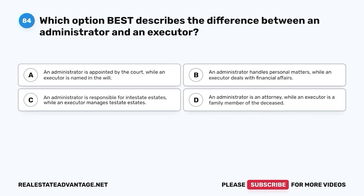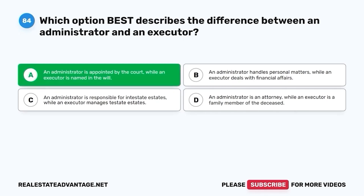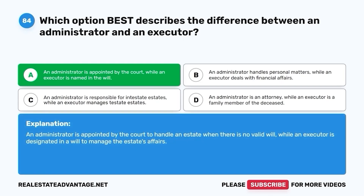Question 84. Which option best describes the difference between an administrator and an executor? A. An administrator is appointed by the court, while an executor is named in the will. B. An administrator handles personal matters, while an executor deals with financial affairs. C. An administrator is responsible for intestate estates, while an executor manages testate estates. D. An administrator is an attorney, while an executor is a family member of the deceased. The correct answer is A. An administrator is appointed by the court when there is no valid will, while an executor is designated in a will to manage the estate's affairs.